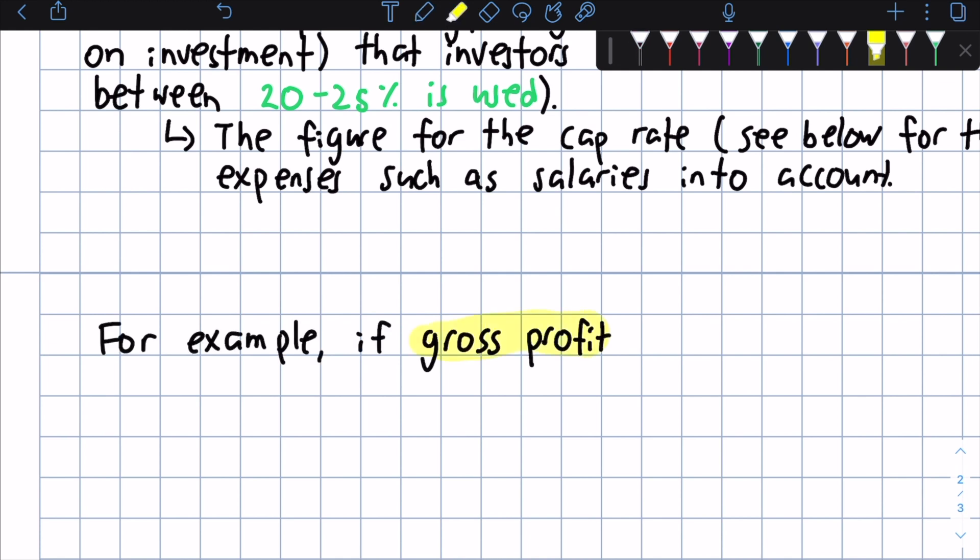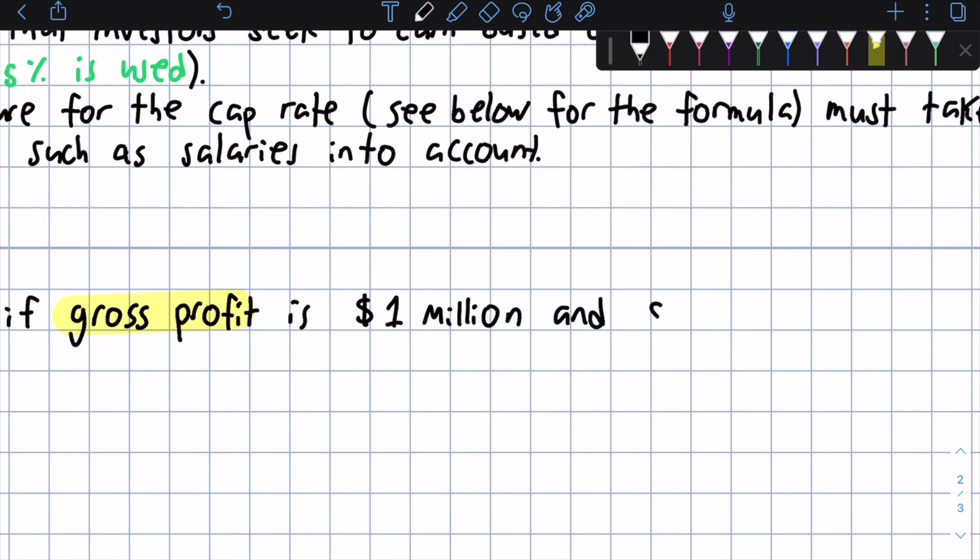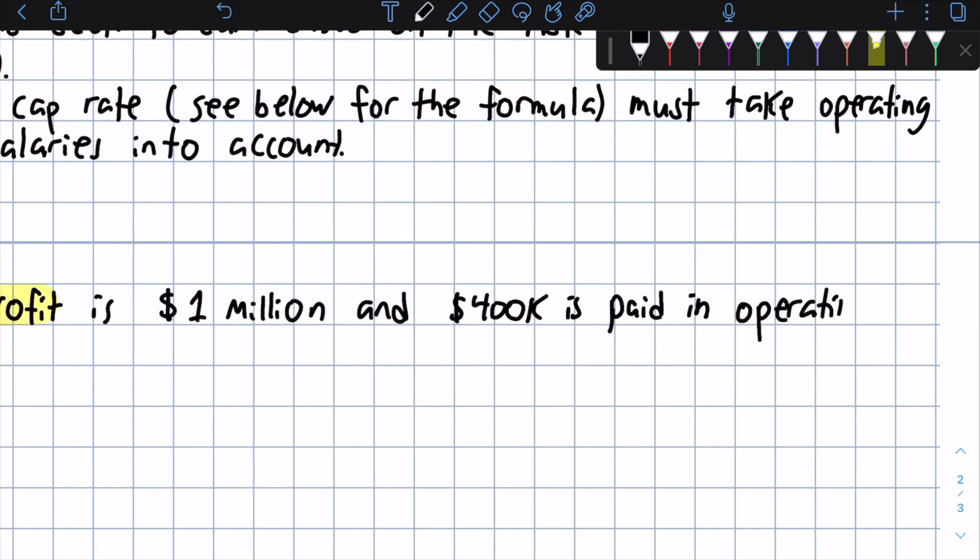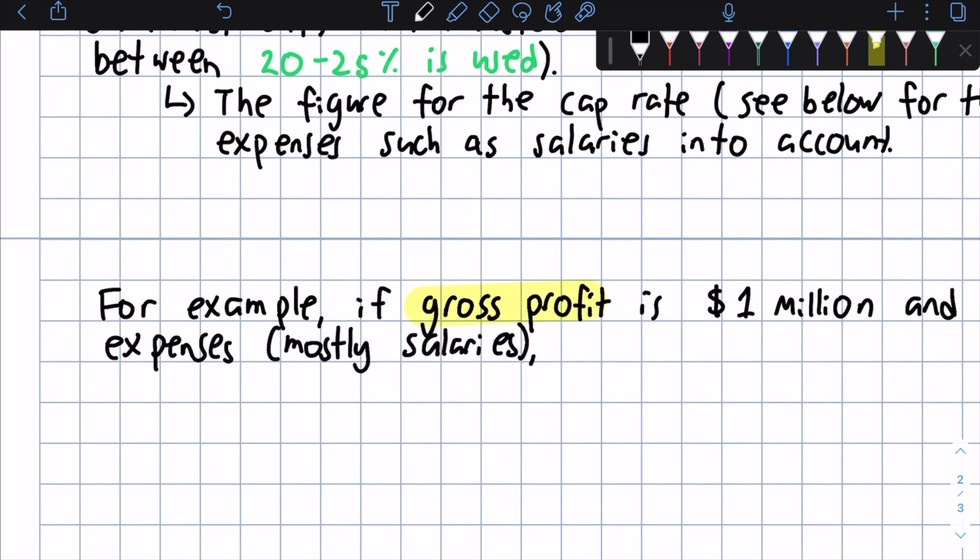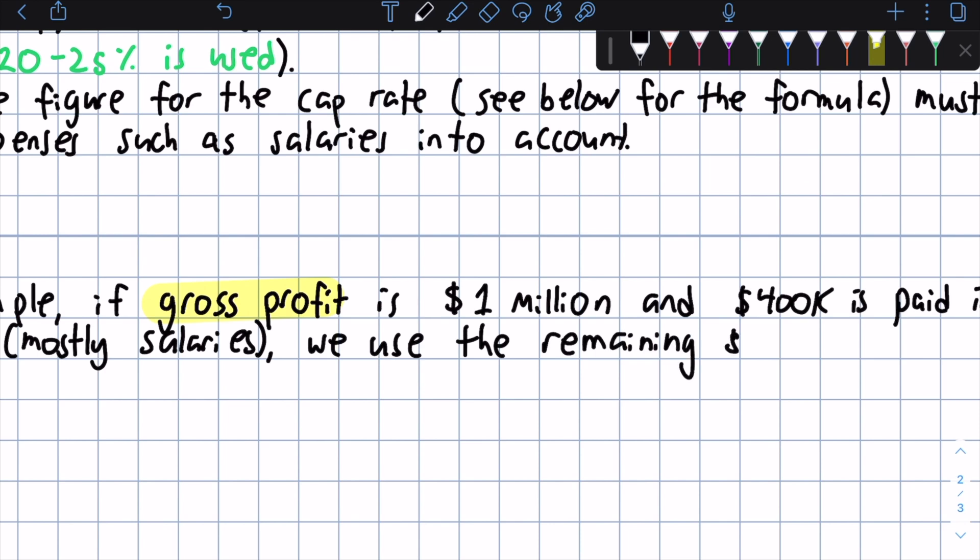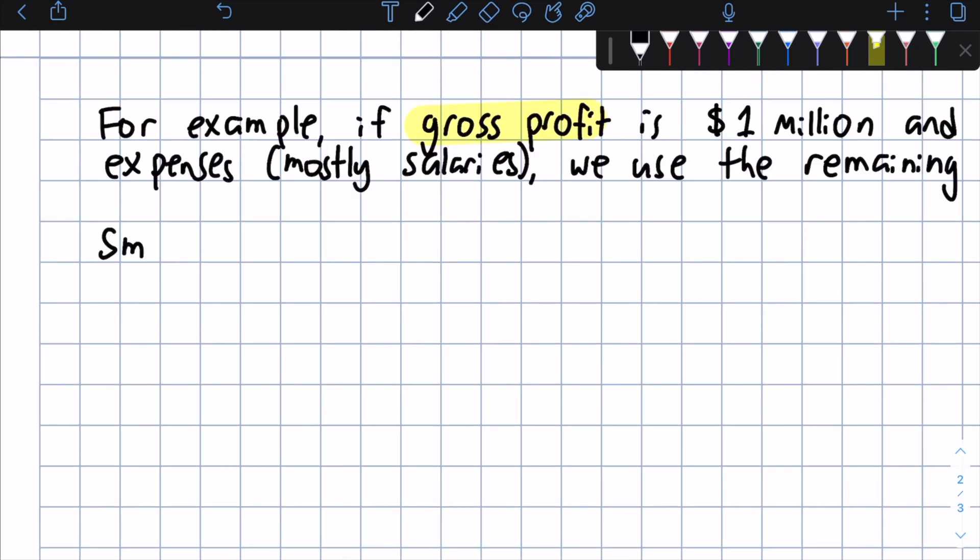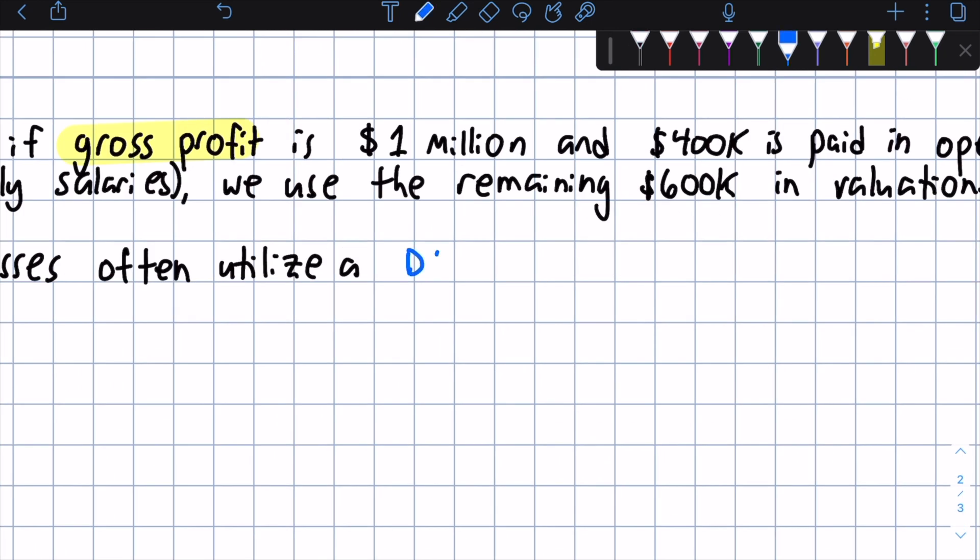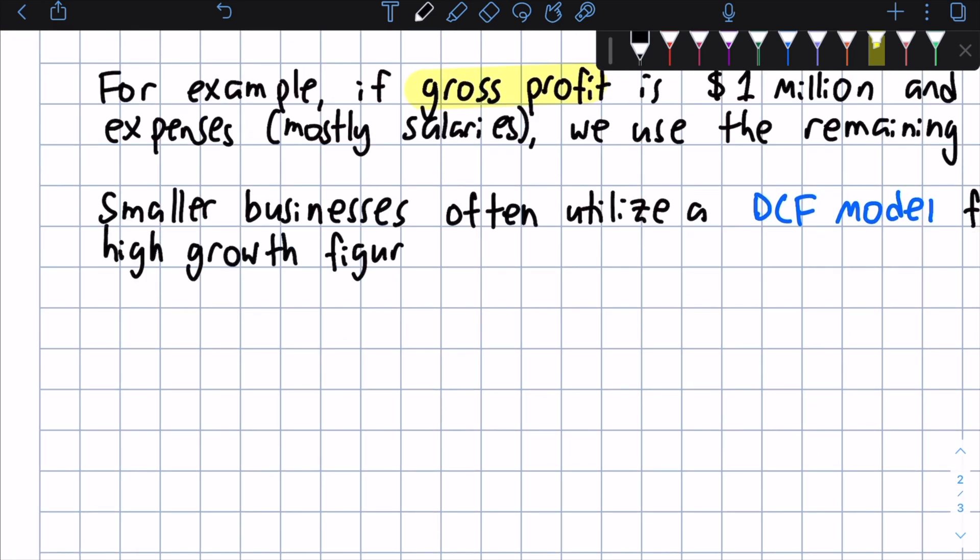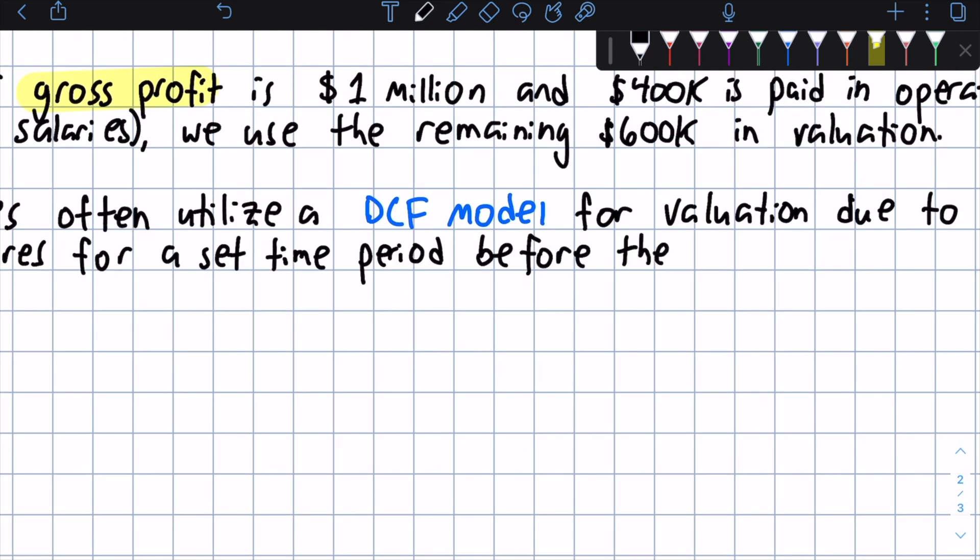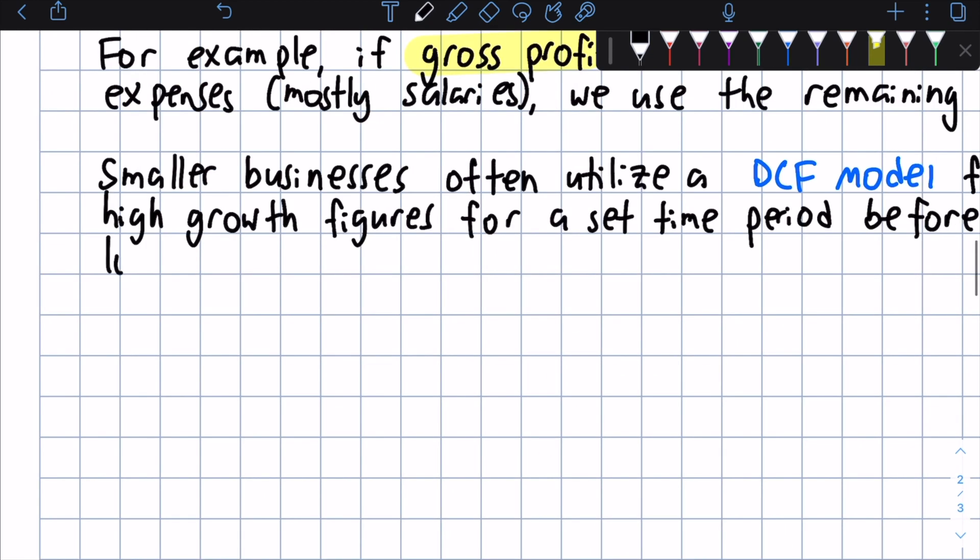So for example, if the gross profit of a business is $1 million, and $400,000 is paid in operating expenses or operating costs, which is mostly salaries, we use the remaining $600,000 for the valuation. Smaller businesses often are better off and utilize a DCF model for valuation. And this is due to their high growth figures for a set period of time into the future. And this is before they become stable at lower growth rates, in which case CE valuation is more useful.